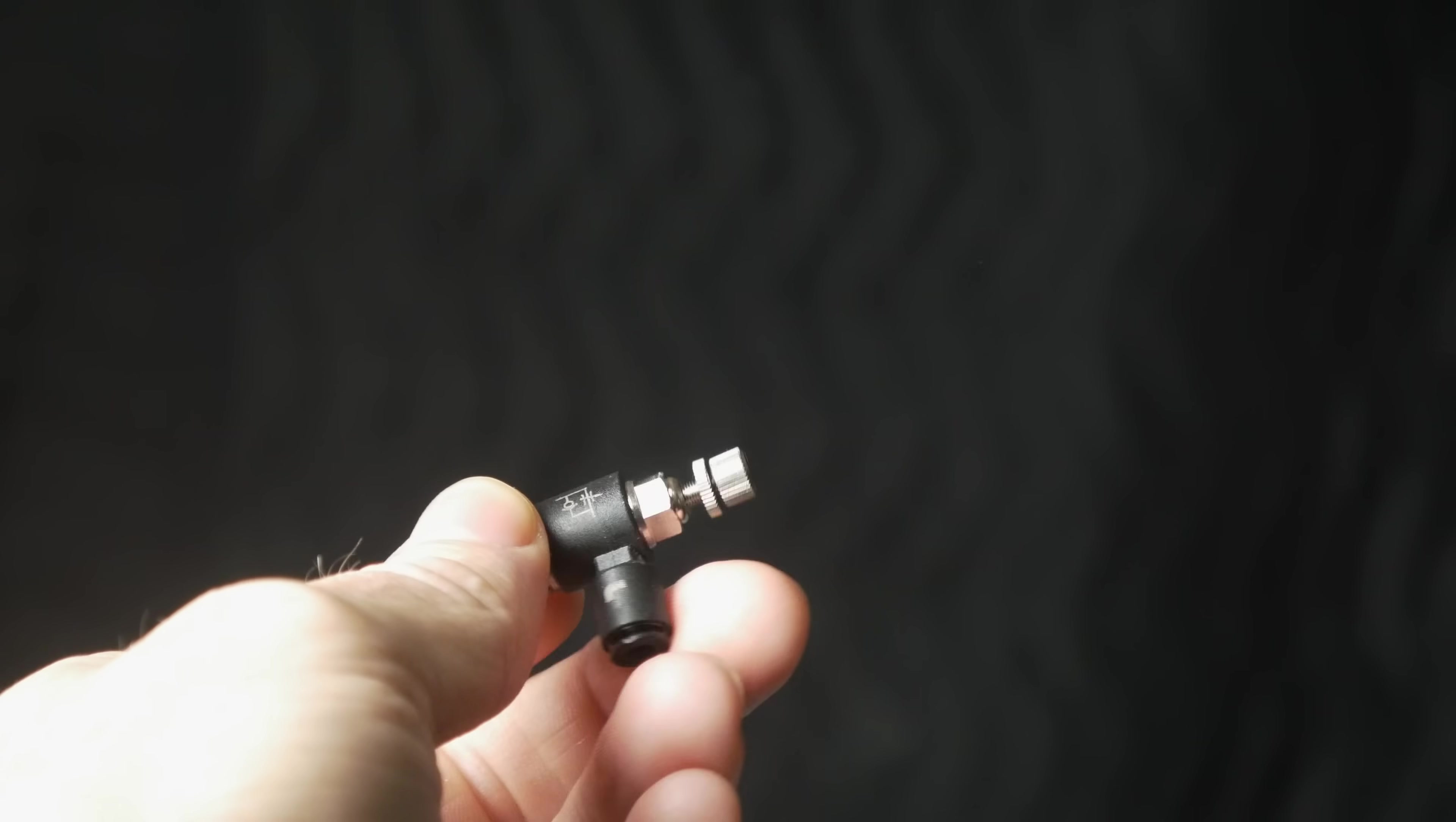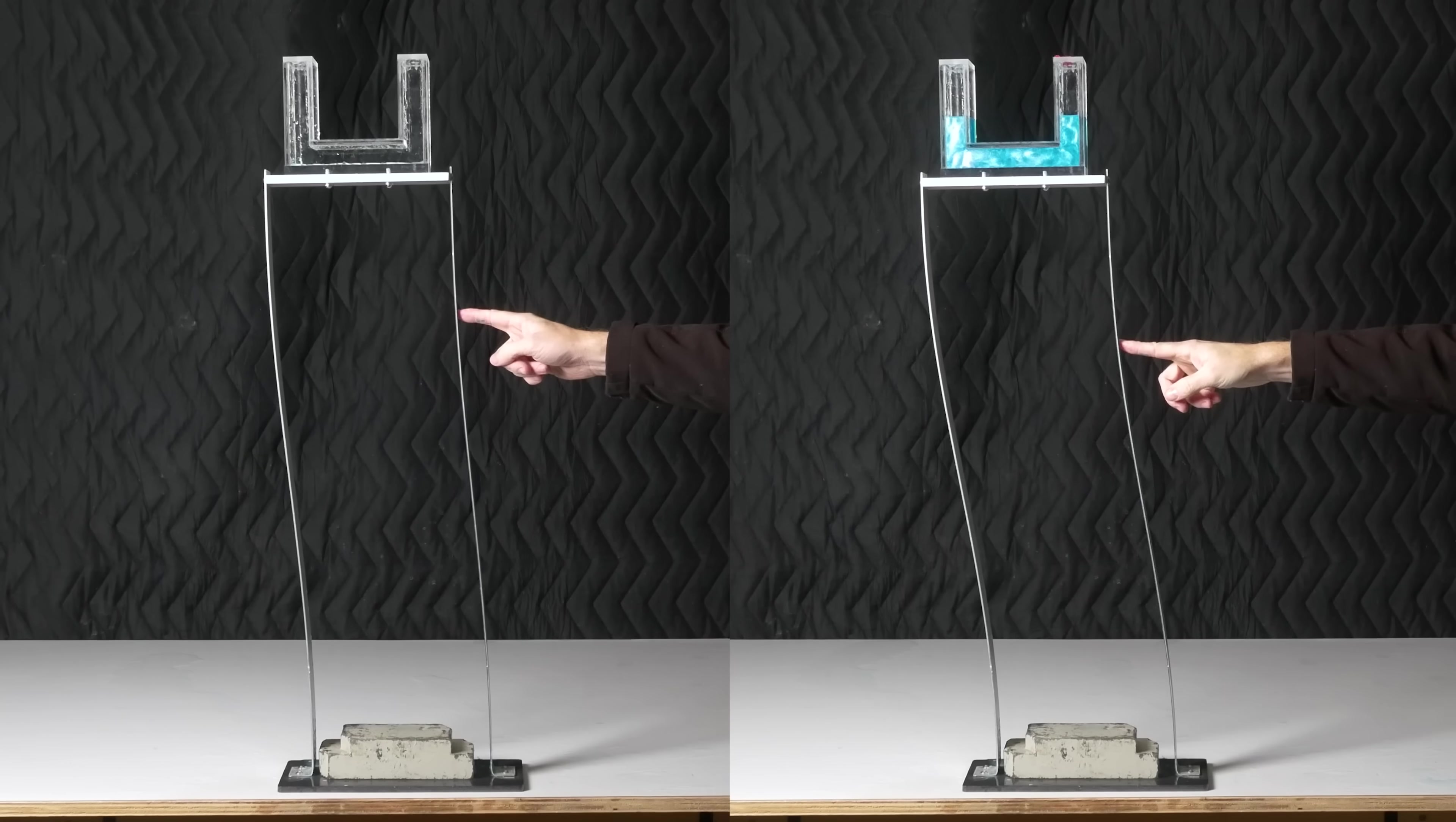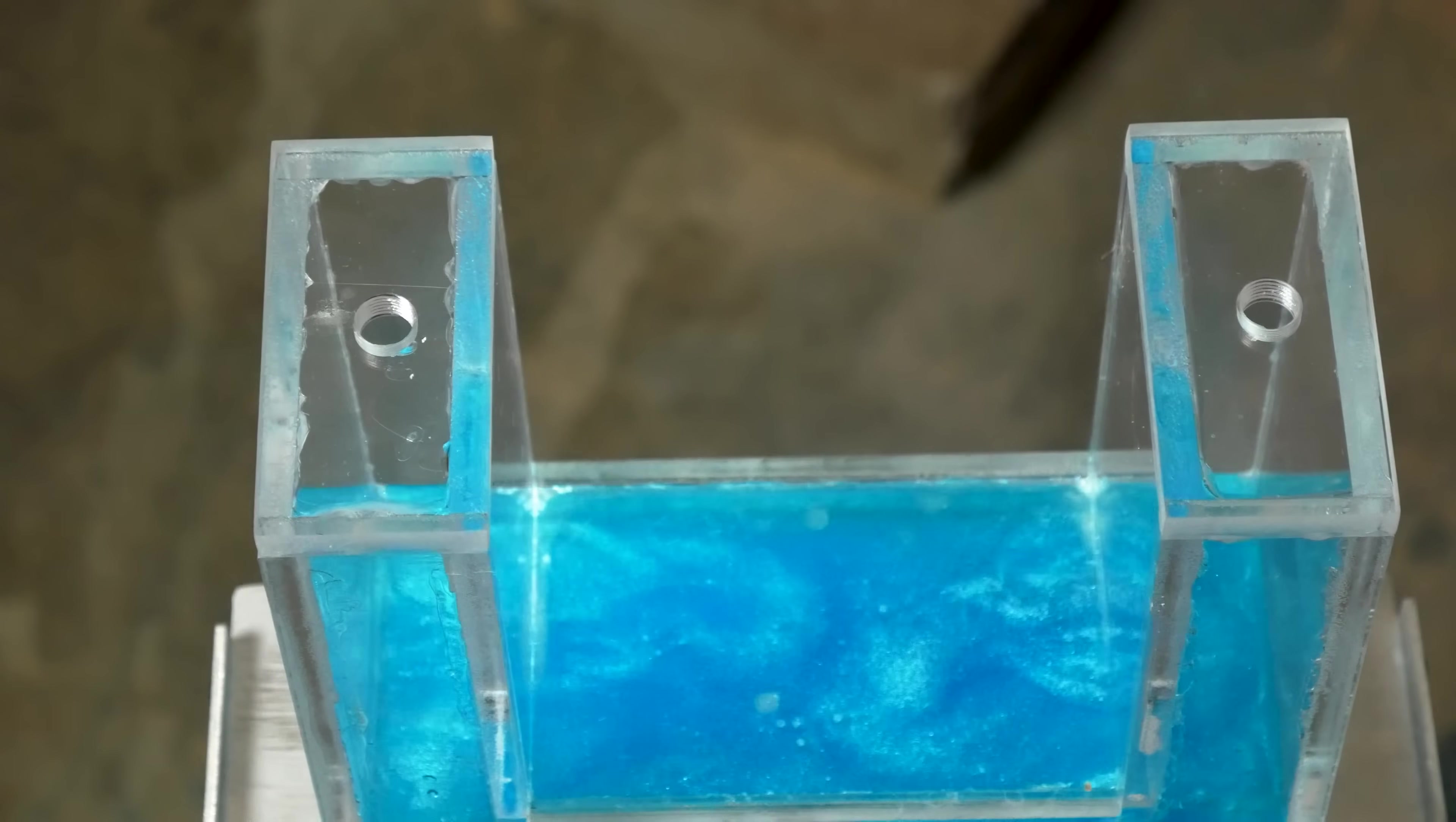I actually bought a fancy air valve to make this adjustable, but it didn't allow quite enough airflow, so instead I simplified with a piece of tape. Very technical. Energy transferred to the water through the building is dissipated by the friction of the air as it moves in and out of the columns. And you can even hear this as it happens.